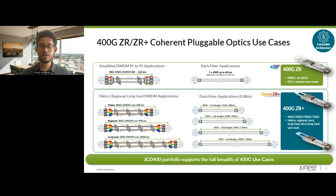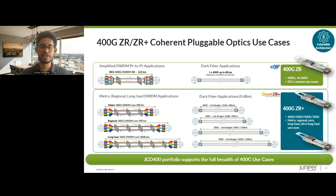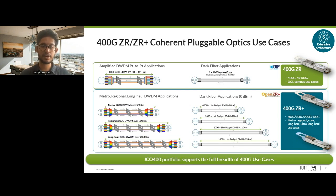OpenZR Plus can really be thought of as a superset of ZR — it takes ZR, leverages stronger forward error correction and stronger CD tolerance, offering the flexibility of multiple operating modes to extend coherent pluggables to the service provider world. Now, with zero dBm plugs available and overcoming performance barriers of low-output power plugs especially in ROADM-based networks, ZR Plus is finally being seriously sought out in the service provider community. Deployed in an amplified link, you can achieve upwards of 500 kilometers in 400-gig mode and over 2,000 kilometers in 200 and 100-gig modes.